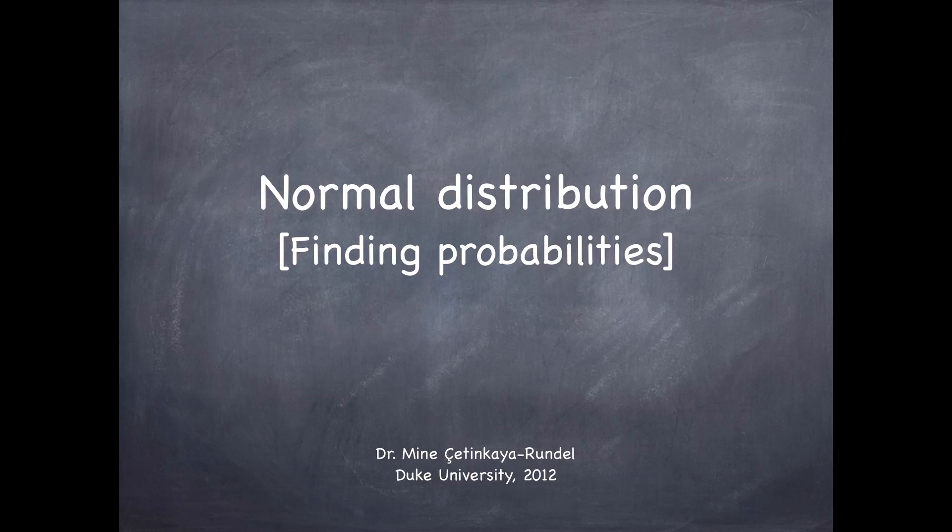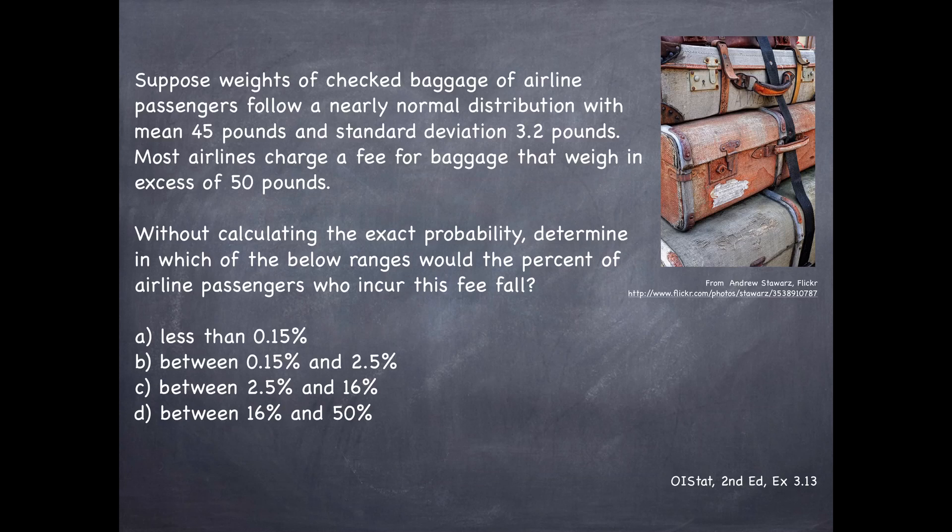In this video, we're going to talk about the normal distribution and finding probabilities using the normal distribution. Let's try this with an example. Suppose weights of checked baggage of airline passengers follow a nearly normal distribution with mean 45 pounds and standard deviation 3.2 pounds.